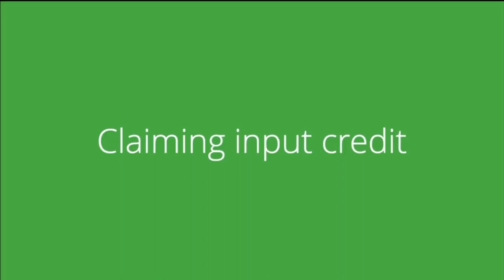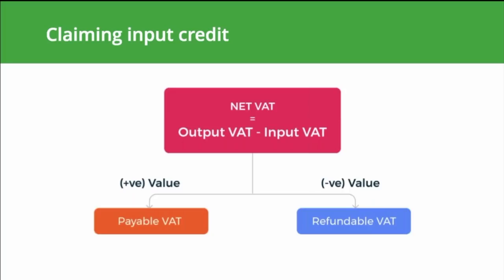Claiming input credit. Input tax is the tax applied on the purchase of goods and services, while output tax is the tax applied on the sale of goods or services. The VAT taxation structure allows businesses to claim input credit for the tax they paid while purchasing capital goods. On calculating net VAT, if the value is positive you have payable VAT, and if it is negative you can claim input credit.